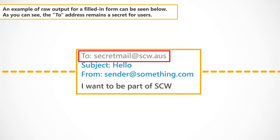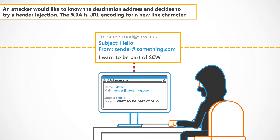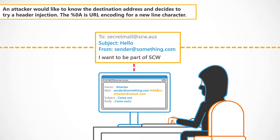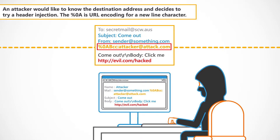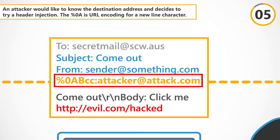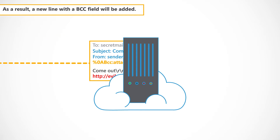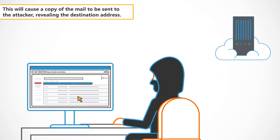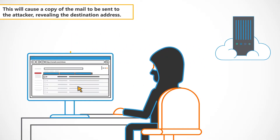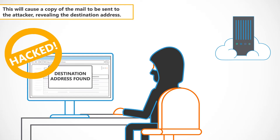As you can see, the to address remains a secret for users. An attacker would like to know the destination address and decides to try a header injection. The %0A is URL encoding for a newline character. As a result, a newline with a BCC field will be added, causing a copy of the mail to be sent to the attacker, revealing the destination address.